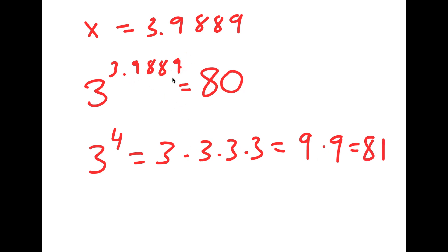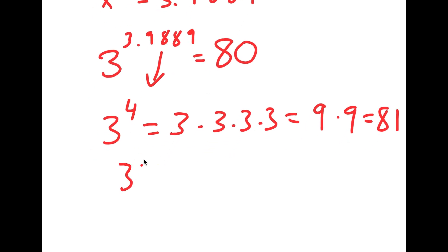Now, 3.9889 is a little less than 4, meaning we can estimate that it's going to be around 1 less than 81. So it's safe to say that 3 to the power of 3.9889 is close to the value of 80.